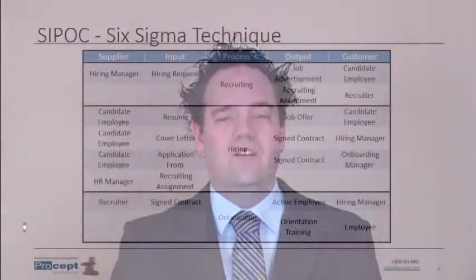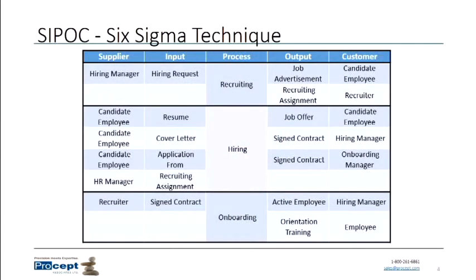It's important to note that supplier and customer here are from the perspective of the process itself — suppliers to the process, customers of the process. This might actually be the big-C customer of our company, where we're producing a finished good for them. But it could also be an internal customer. For example, I'm a customer of the employee expense process because I want to get my expenses paid at the end of that process. Similarly, suppliers could be internal or external — they're not necessarily the capital-S supplier organization providing things to our company.